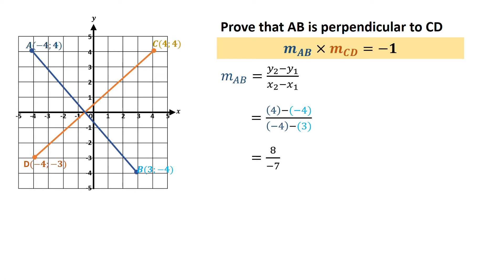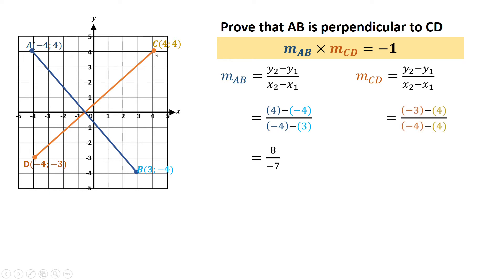Then I'm going to calculate the gradient of line CD. Again I'm going to use my gradient formula. So my y's — I think I started from negative 3 — so negative 3 minus 4 over negative 4 minus 4. If I calculate those gradients I'm going to get negative 7 over negative 8, and that simplifies to 7 over 8.